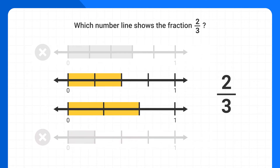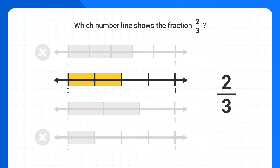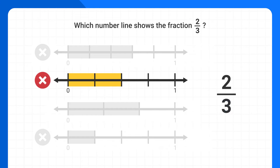Now we have narrowed down our options and one of these two number lines is correct. The next thing I'm going to look at is our denominator. Our denominator is 3, which means there should be a total of three parts between 0 and 1 on the number line. When we look at the first number line, we see that there are 1, 2, 3, 4 parts, and our number line was supposed to have 3. That means this number line can't be correct.